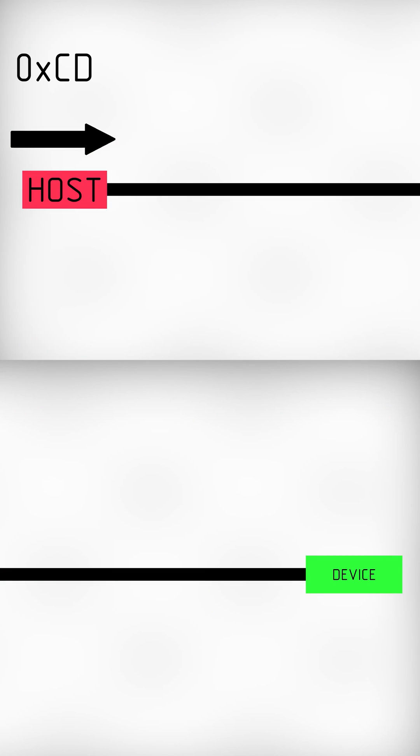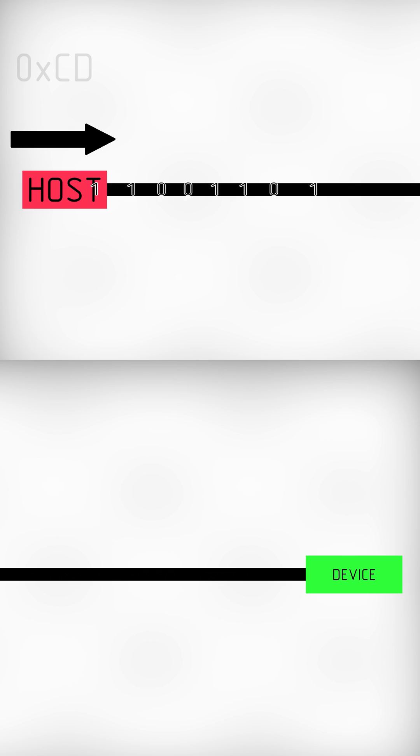USB uses a serial method of transfer, meaning the sending side breaks data into bits and sends it over, and the receiving side reassembles it.